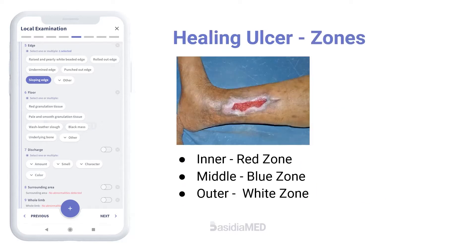Every healing ulcer has a sloping edge that shows three zones from inside out. First is the red zone, due to central healthy red granulation tissue. Second is the middle blue zone, consisting of active growing epithelium. Third is the outermost white zone, consisting of fibrous tissue and scar.